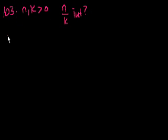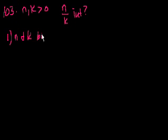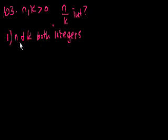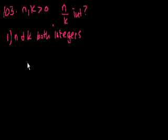Statement 1 says n and k are both integers. Well, that still doesn't help much. n could be 2 and k could be 100, and 2 over 100 is 1 over 50 — that's not an integer. Although n could be 4 and k could be 2, and 4 over 2 is 2, which is an integer. So statement 1 by itself doesn't help.